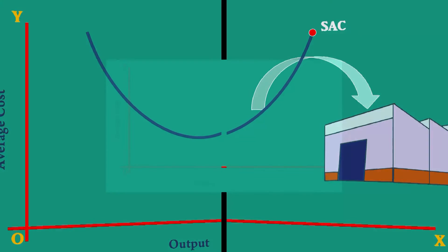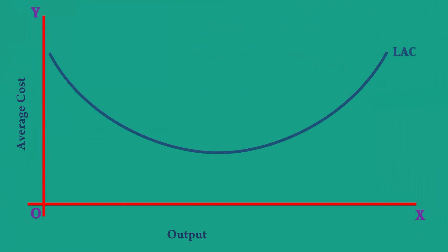The long run average cost curve is a planning curve. The firm moves along the long run average cost curve. It means it can move from one plant size to another plant size to produce a given level of output.